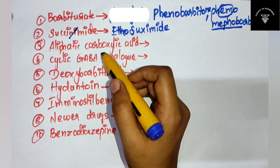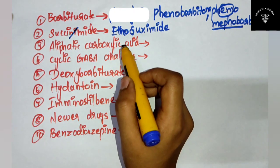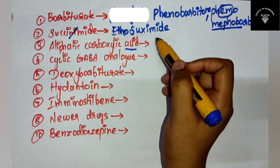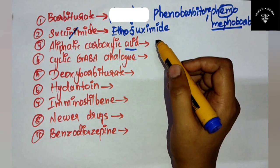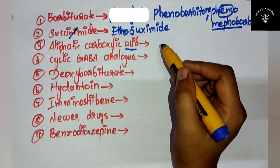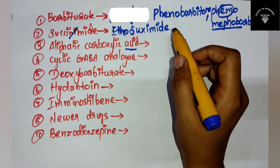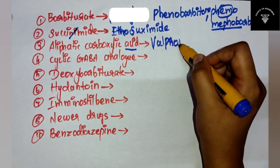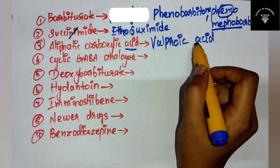Now next is your aliphatic carboxylic acid. You can remember that the barber cleans the walls of the house - those walls are prone to acid, so he cleans only with water, not acid. The walls are prone to acid - that is valproic acid.